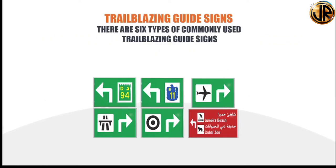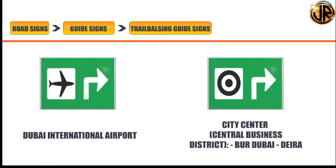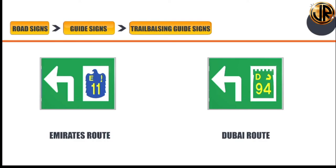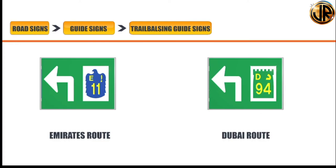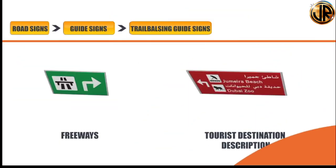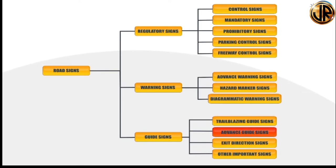There are different types of guide signs; commonly used ones are trailblazing guide signs, advance guide signs, exit direction signs and other important signs. Trailblazing guide signs are route-finding signs with recognizable symbols or numbers guiding road users that they are on the correct road to reach their destination. Six types include the airport sign with an airplane picture, city center sign with a black circle and dot, Emirates route sign, freeway sign indicating the direction of freeway, and tourist destination signs with brown backgrounds for tourist destinations and specific landmarks. Advance guide signs include route emblems, trailblazing symbols and directional information; motorists must check the information and position their vehicle according to their required destination.